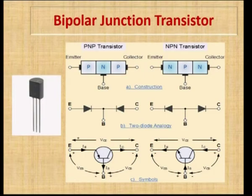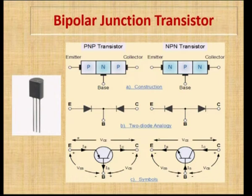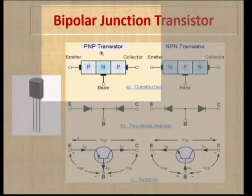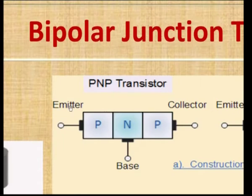A Bipolar Junction Transistor is a three terminal, three layer device having two junctions. The junctions are PN-PN; when two PN junctions are joined together they form a transistor. In the figure we can observe the terminals in the Bipolar Transistor.